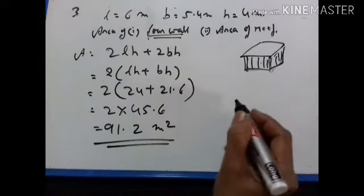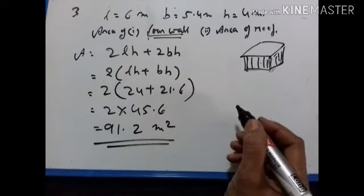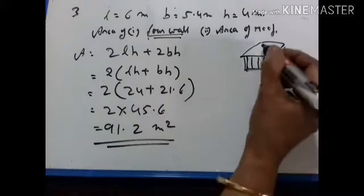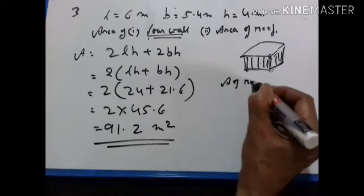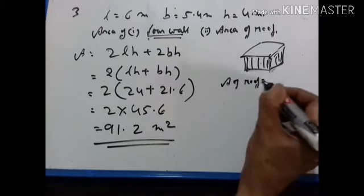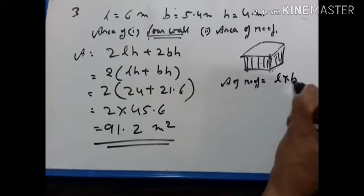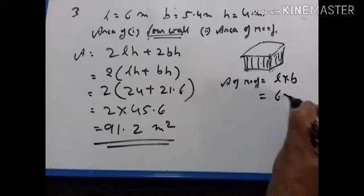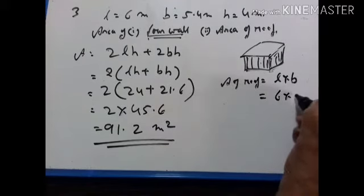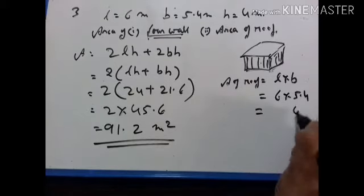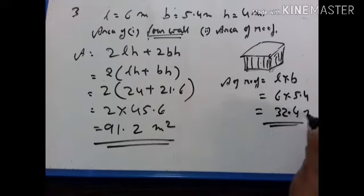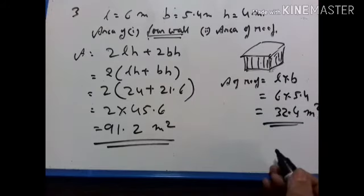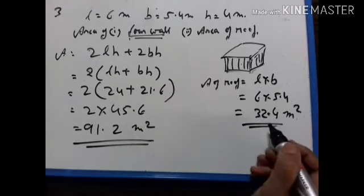Now we have to find the area of the roof. Roof area is equal to length into breadth. Length is equal to 6 meter and breadth is equal to 5.4 meter. Area of roof is equal to 32.4 meter square. That is the area of the roof.